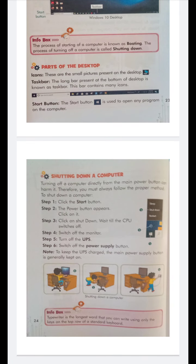Now you will learn how to shut down a computer. To shut down a computer, turning off a computer directly from the main power can harm it. That means if you turn off the computer directly from the main power, you can harm your computer. Therefore, you must follow some proper methods to shut down a computer. These steps are important for the computer and they prevent harm.